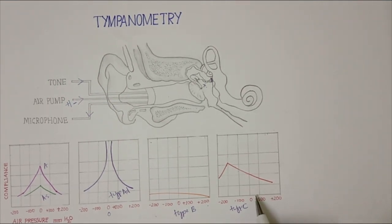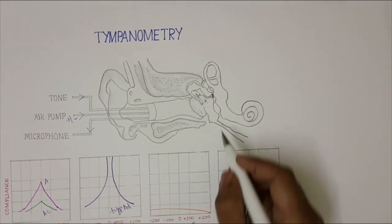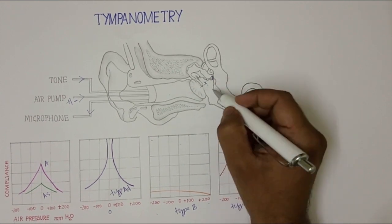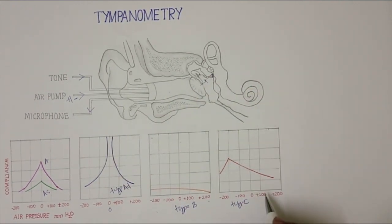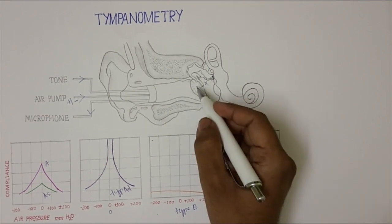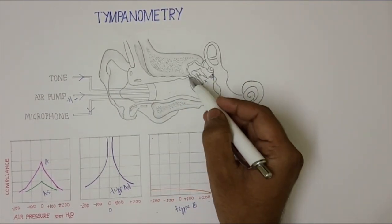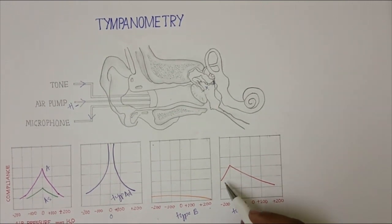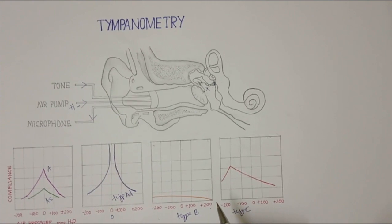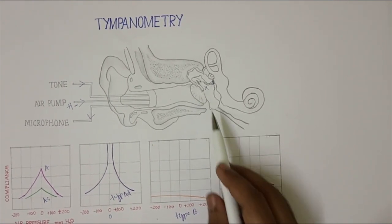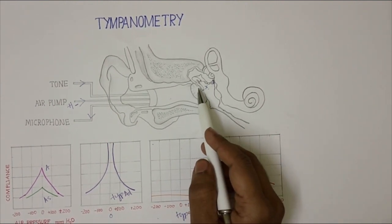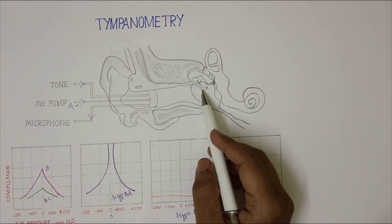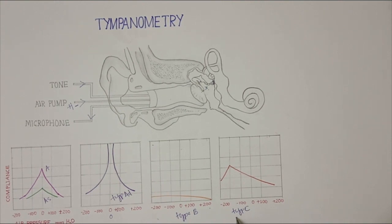In the fourth type, compliance is maximum at negative pressure. You will see this type of curve when the tympanic membrane is retracted — you have to pull the tympanic membrane outward to produce maximum compliance. This type of curve is called the Type C curve.